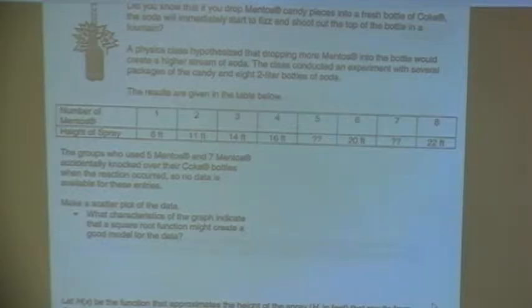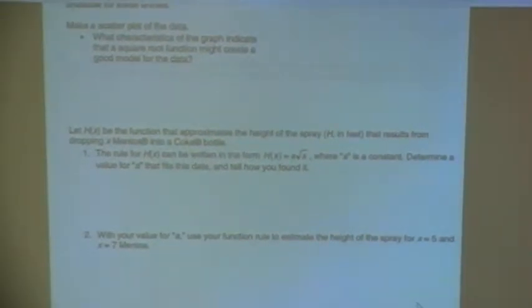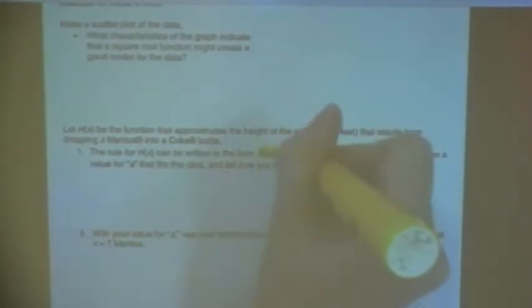Okay, so let's go down to problem number one. Now that we know that we're using a square root function, it says let h of x be the function that you're using to approximate the height in feet that results from dropping x number of Mentos into a Coke bottle. So the rule can be written just like this: h of x equals a times square root of x, where a is a constant.